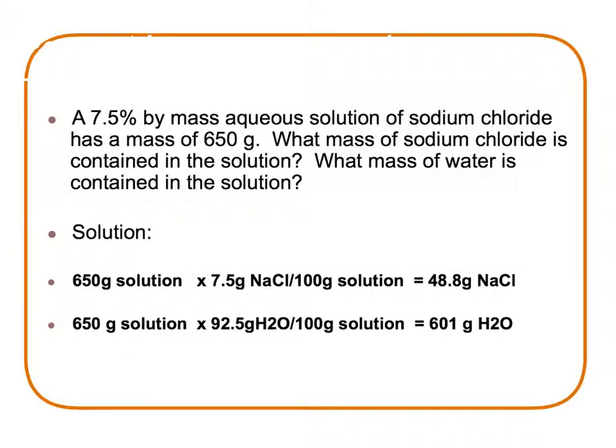Finally, we have taken the percent by mass problem and put a little twist to it. We are given that 7.5% by mass of the solution would be sodium chloride, and we know that the mass of the solution is 650 grams. We are asked to solve for the mass of sodium chloride in the solution and the mass of the water in the solution.